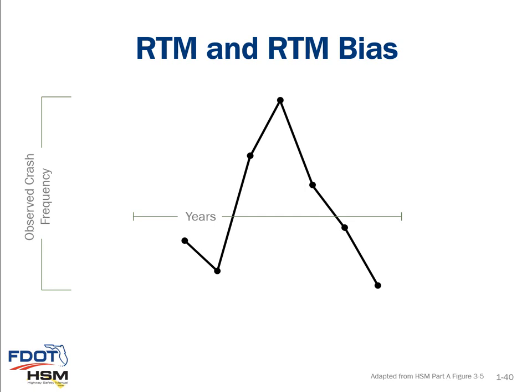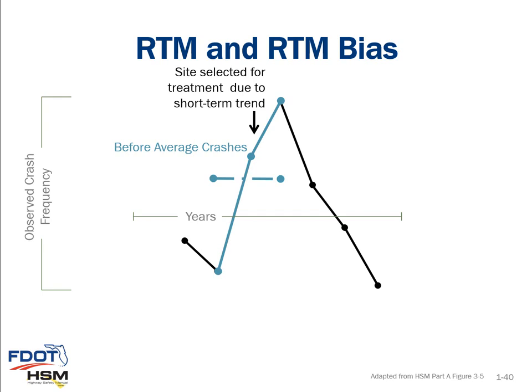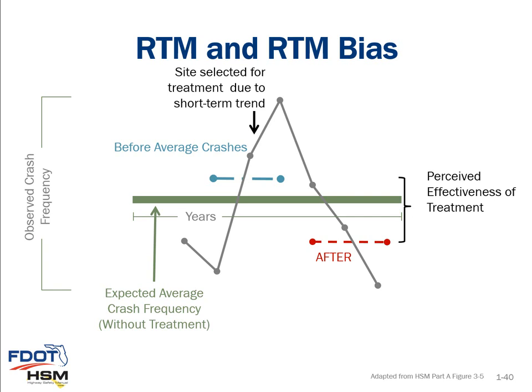Another issue related to regression to the mean involves selecting sites for improvement and measuring treatment effectiveness. If crash frequencies are increasing over two to four years and a site is selected based on that short-term upward trend, regression to the mean means crashes will likely decrease during the following years even without treatment. If we then apply a treatment that does reduce crashes, we cannot attribute the entire reduction to the treatment alone — some of it is attributable to regression to the mean. We use the empirical Bayes process in before-and-after studies to account for regression to the mean and identify the actual reduction due to the treatment.